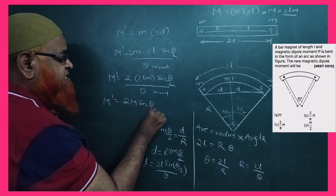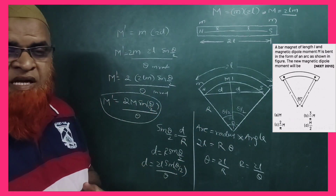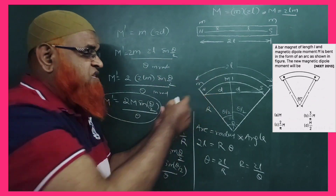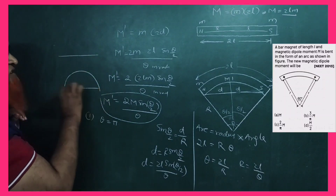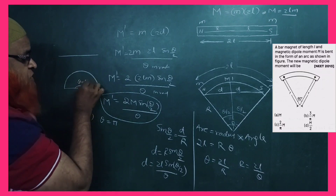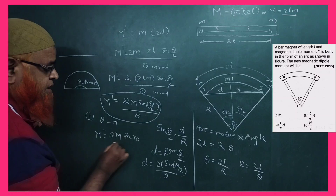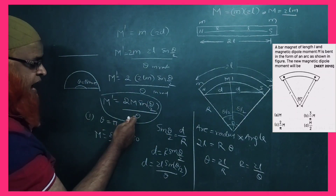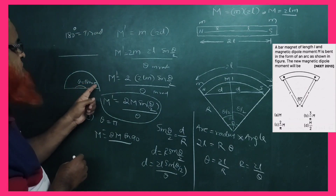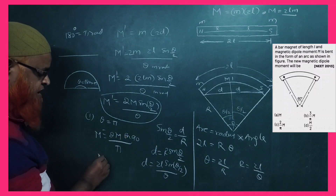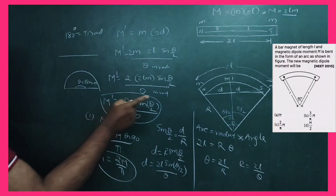Let's apply this formula. Example 1: if θ = 180° (magnet bent into a semicircle), θ in radians is π. Then M' = 2M · sin(180°/2) / π = 2M · sin(90°) / π = 2M × 1 / π. Therefore, the new magnetic moment M' = 2M / π.